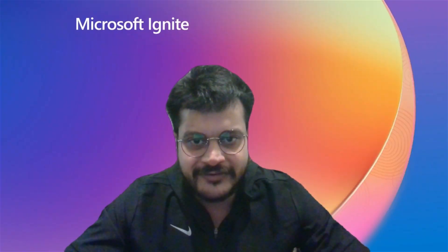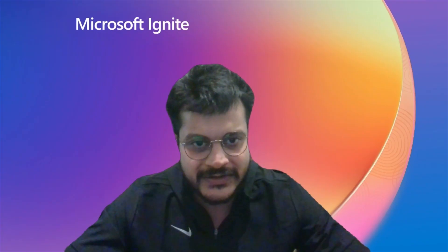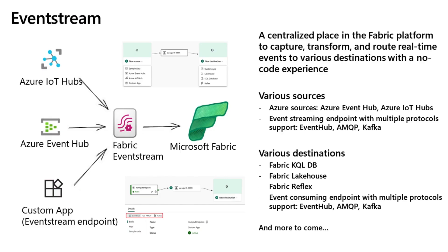The Event Stream feature in Microsoft Fabric gives you a centralized place in the Fabric platform to capture, transform, and route real-time events from various sources to a destination with no-code experience. Some of the Azure resources supported by Event Stream are Azure Event Hub and Azure IoT Hub. Event Streaming endpoint supports multiple protocols like Event Hub, AMQP — which in turn supports RabbitMQ — and Kafka.